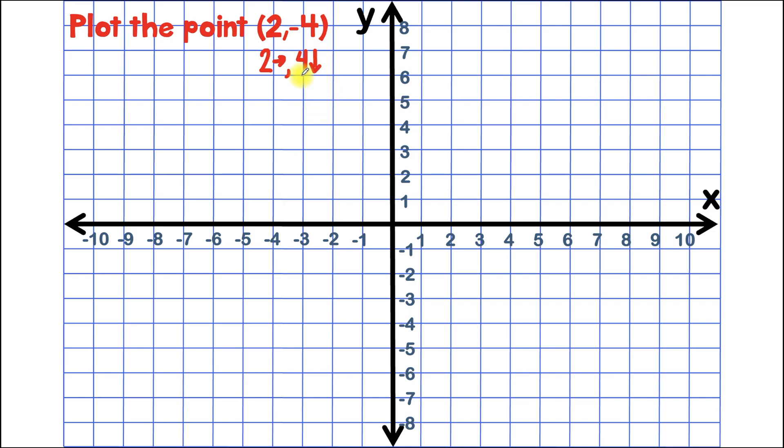So let's get started. First, we'll start at the origin. Next, we'll move using our x-coordinate. So like our plot plan says, we're going to go 2 units to the right. 1, 2.